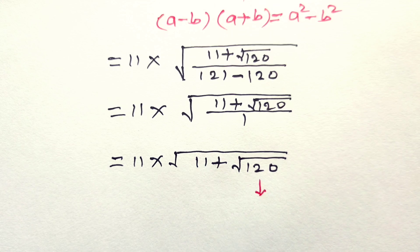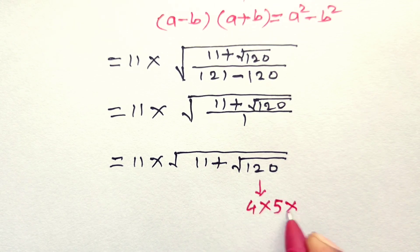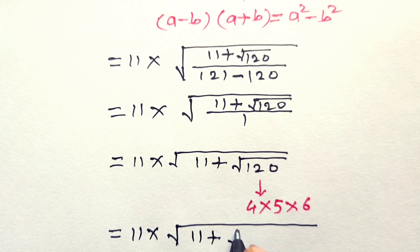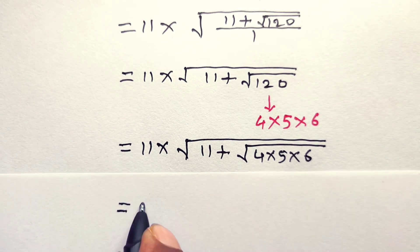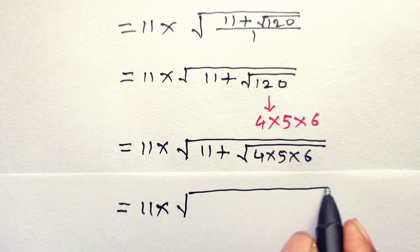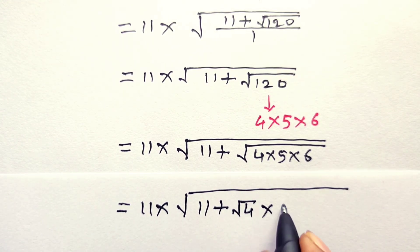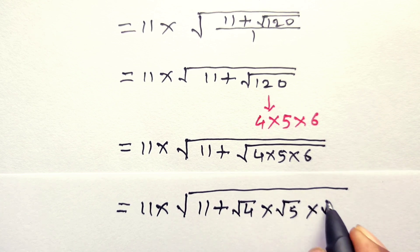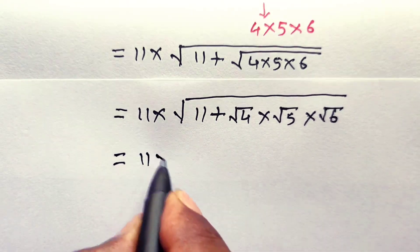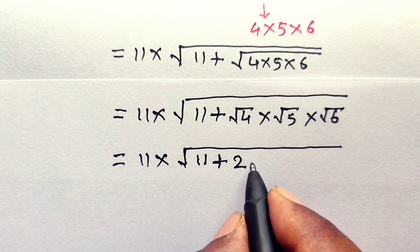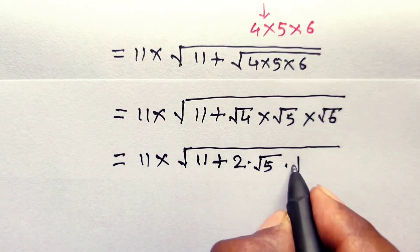Now 120 can be written as 4 into 5 into 6. Hence this is equal to 11 into square root of (11 plus square root of 4 into 5 into 6). This can be written as square root of 4 into square root of 5 into square root of 6, which equals 11 into square root of (11 plus 2 into root 5 into root 6).